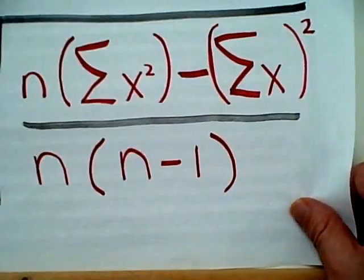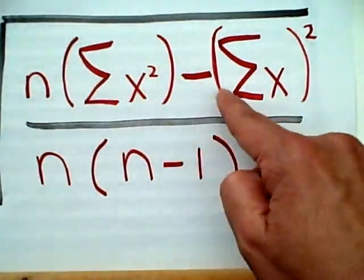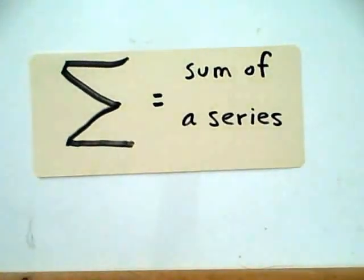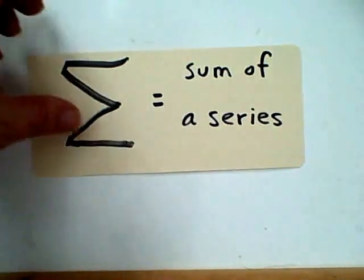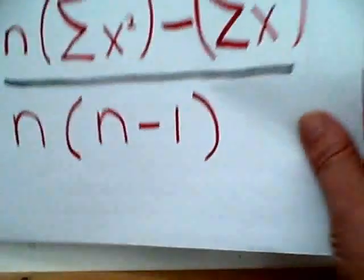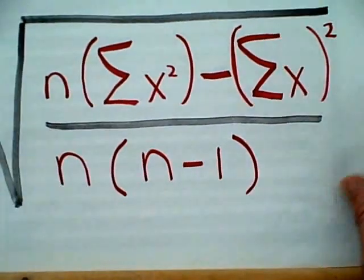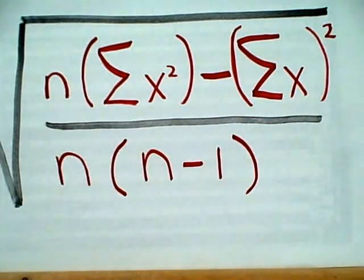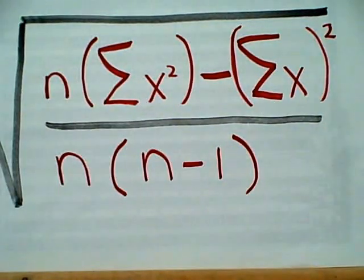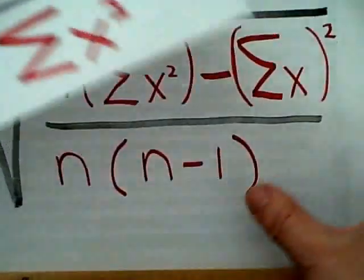The other thing, and that's probably the most scary, is this Greek letter right here. That's a capital sigma. It simply means the sum of a series. Well, now that we know what each of those components stands for, we can take some numbers and we can actually do some calculations.